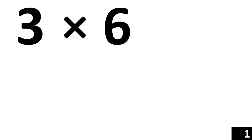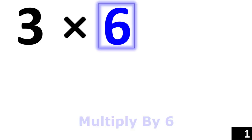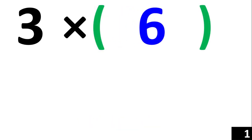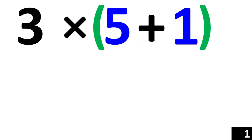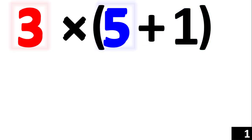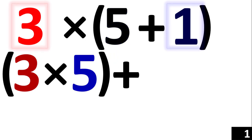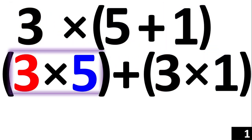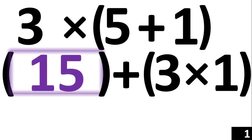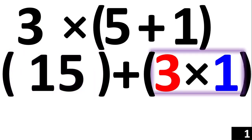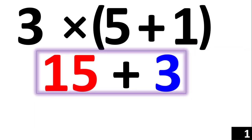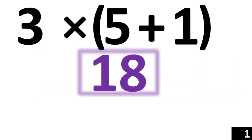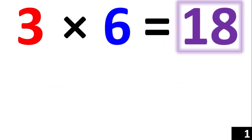The first example is 3 times 6. 6 is the same thing as 5 plus 1. Using the distributive property, we now have 3 times 5 plus 3 times 1. 3 times 5 is equal to 15, and 3 times 1 is equal to 3. Adding them together, 15 plus 3 is equal to 18. Therefore, 3 times 6 is equal to 18.